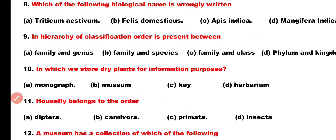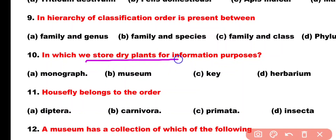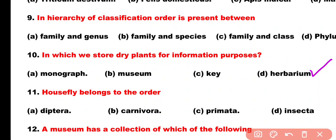Question number 10. In which do we store dry plants for information purposes? Option A: Monograph, Option B: Museum, Option C: Key, Option D: Herbarium. Correct answer is Option D. Dry plants are stored in a herbarium.